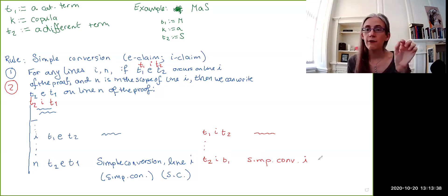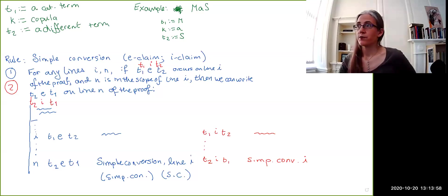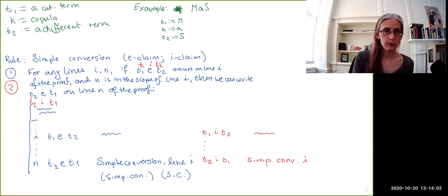So, if the copula is E or I, you can swap the order of the terms. You cannot do simple conversion on an A claim or an O claim. You can only do simple conversion on an E claim or an I claim. So, that is our first transformation rule, the rule of simple conversion.